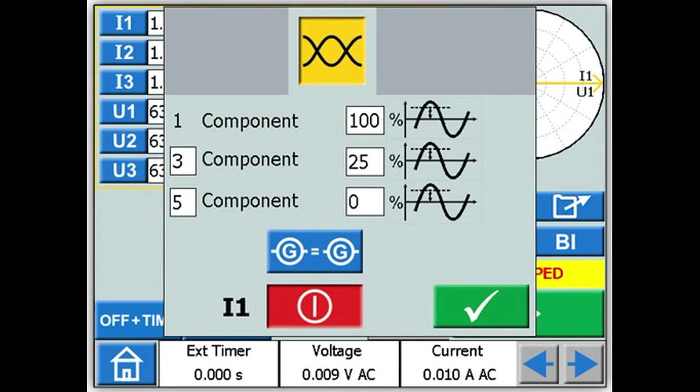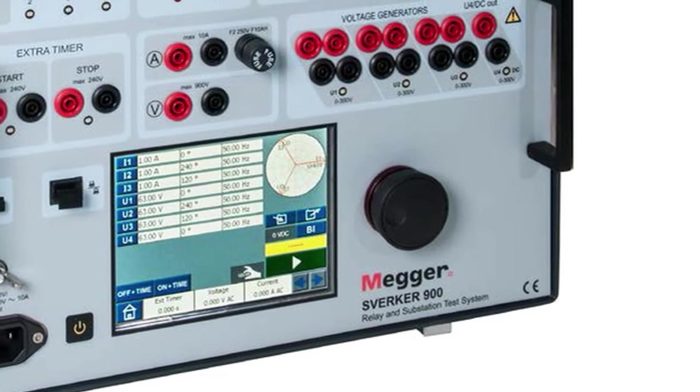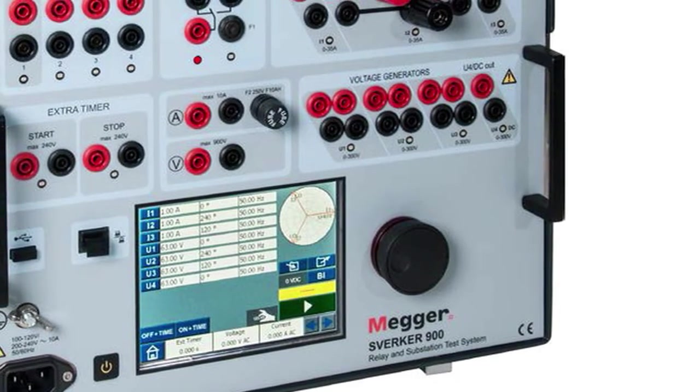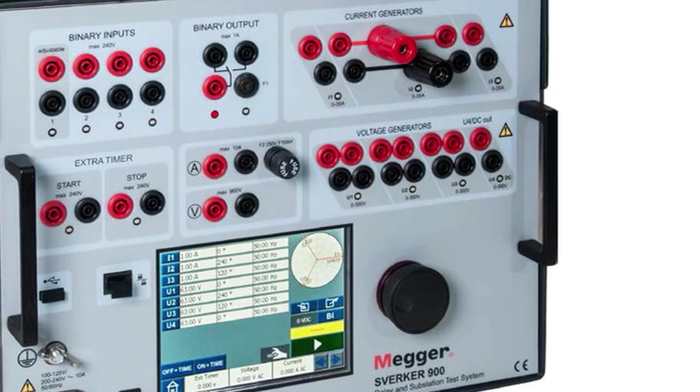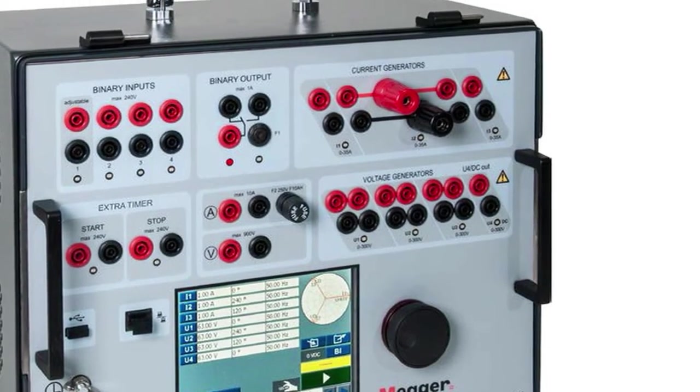The expert version specification adds an impedance screen which allows to test relays directly from the so-called impedance plane where the conversion from impedance into voltage and current is automatically done by the Sverker 900. Basic and standard versions can be upgraded to the higher levels at any time when and if these features are required or your budget allows.